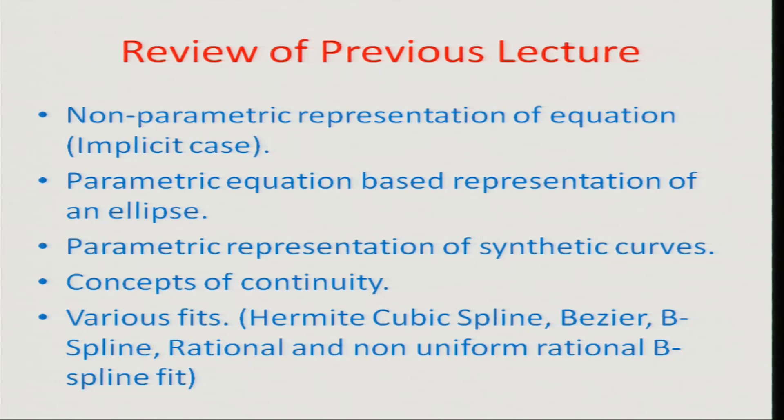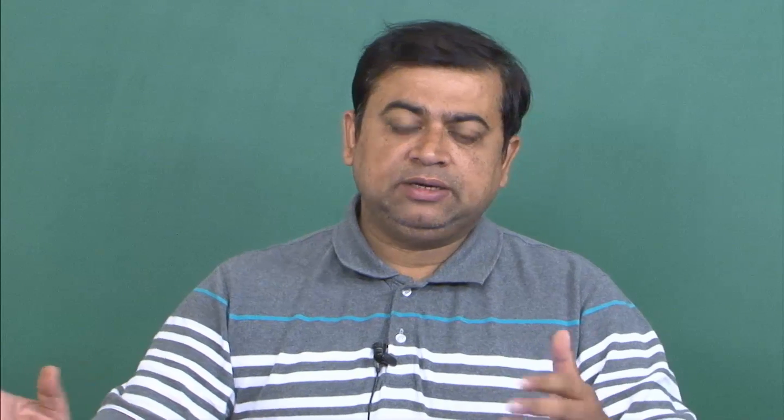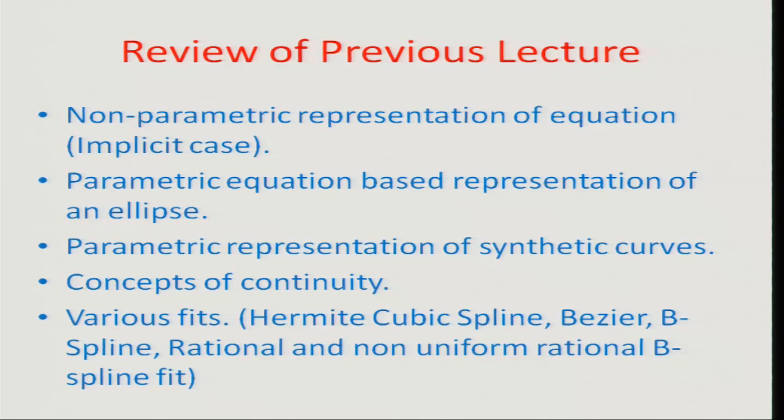We discussed the implicit case in which an ellipse can be represented as a parametric equation in terms of an angle alpha which varies between 0 and 360 degrees. We also talked about how a complex topology can be split up into different synthetic curves with a precedence relationship between the different elements of the curve, and discussed concepts of continuity.